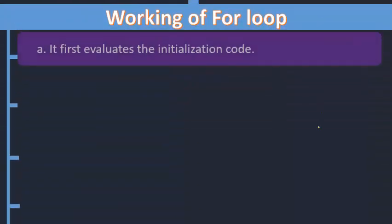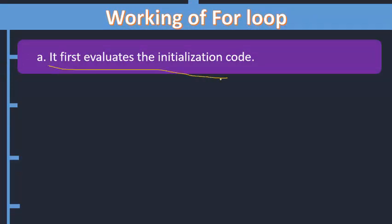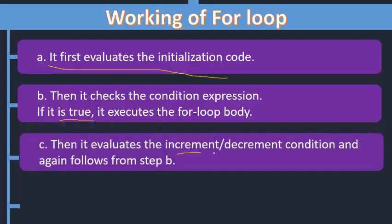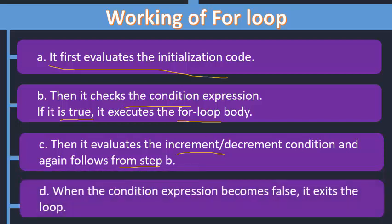The working of the for loop: it evaluates the initialization code, that is, it initializes the counter variable. Then it checks the condition expression. If the expression is true, it executes the for loop body. Then it evaluates the increment or decrement, and again follows from the condition check. When the condition expression becomes false, the loop's working stops — the repetition stops.